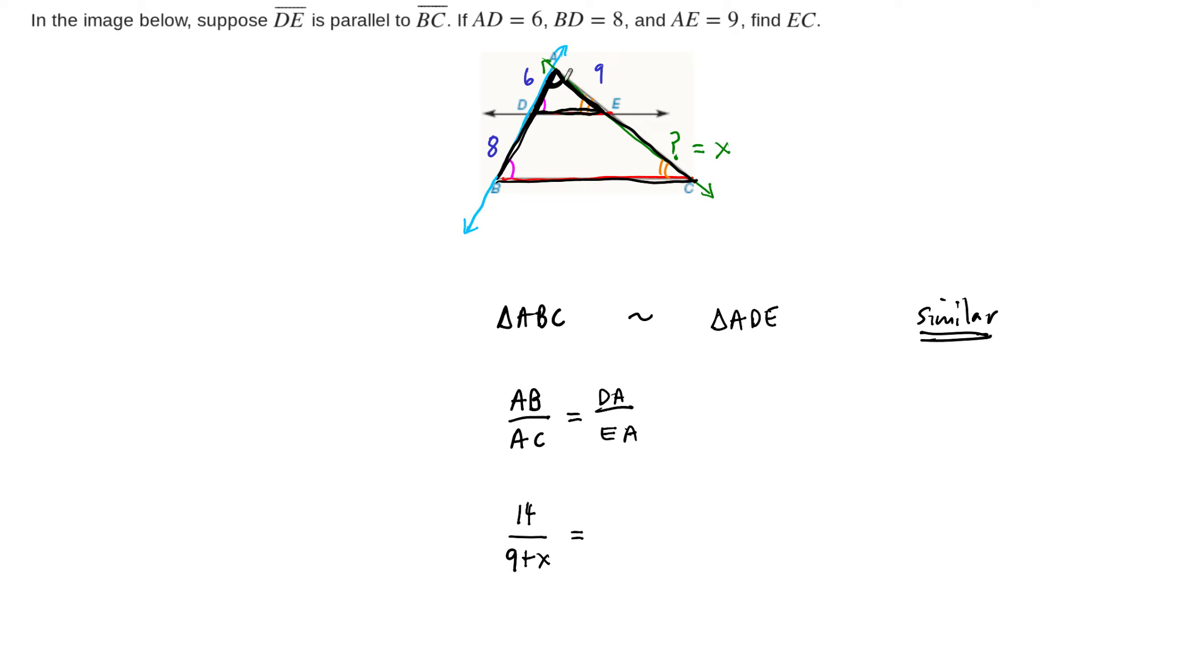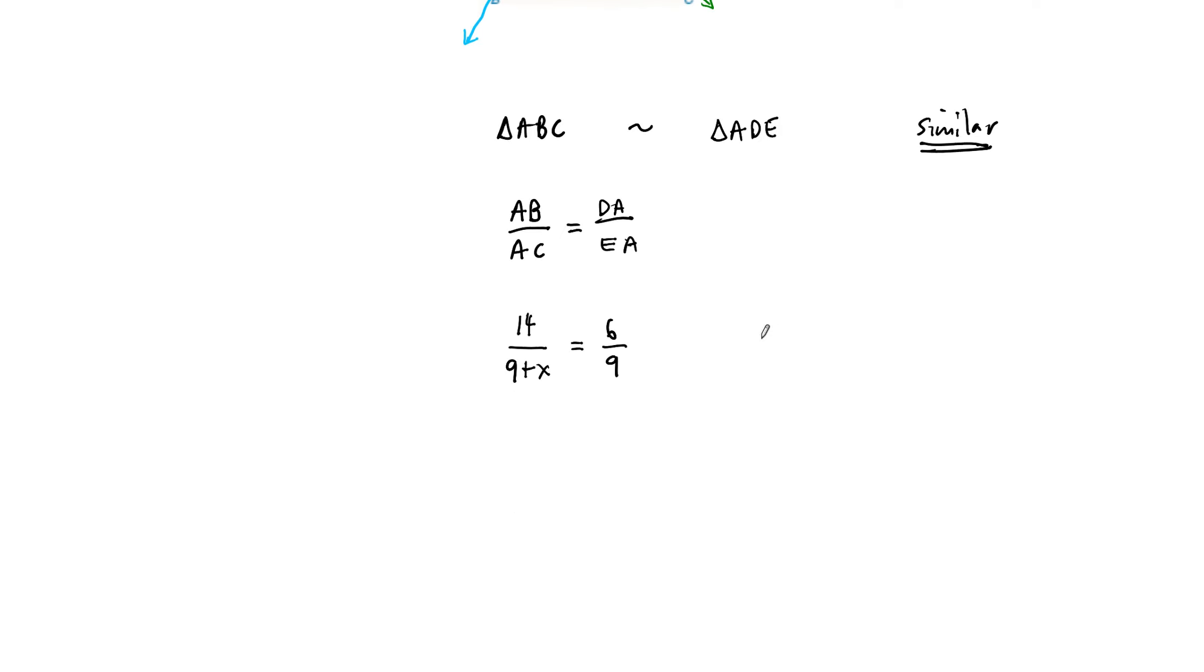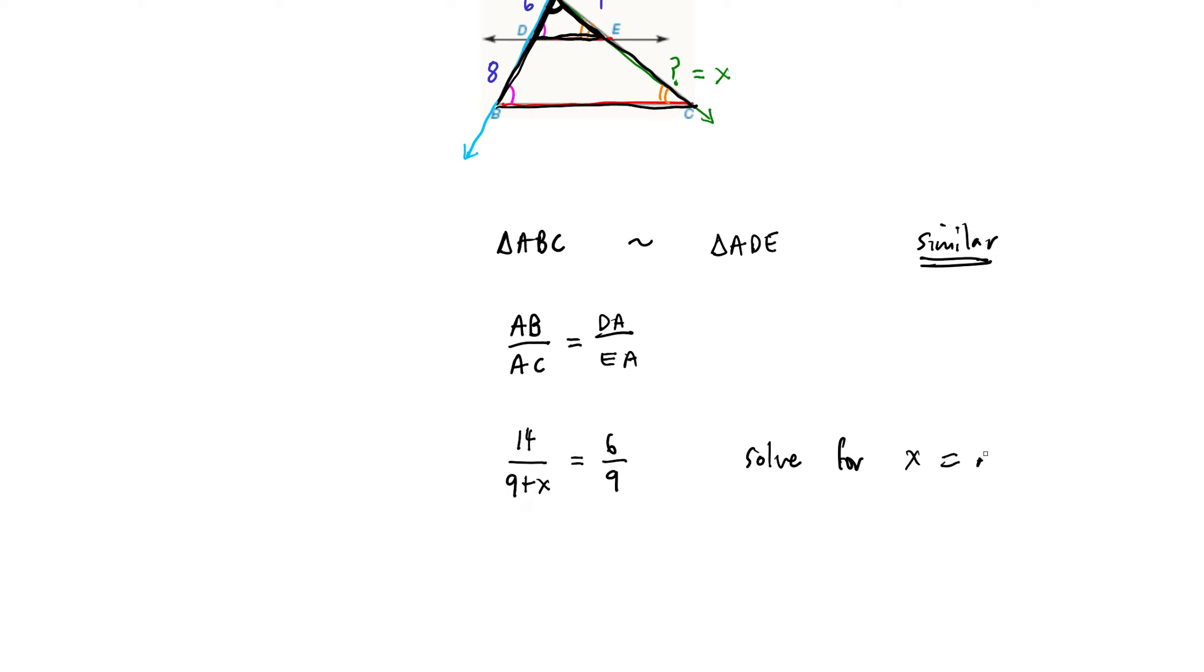On the other side, so for the smaller triangle, the ratio is just DA divided by EA. So 6 over 9, and then our job is to solve this for X. Solve for X, because we've already let X equal the side length that we want, which was EC. So this is the side length for EC.